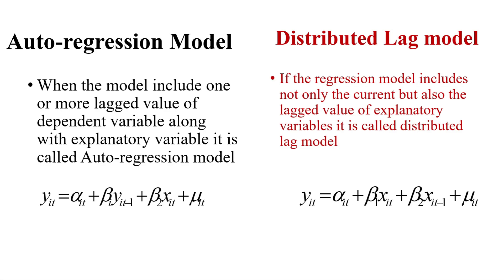We all know about autoregression model — that is when the model includes one or more lagged values of the dependent variable along with the explanatory variable. That means when we use the lag value, t minus 1 or t minus 2, of the dependent variable as an independent variable, then the model is called an autoregression model.